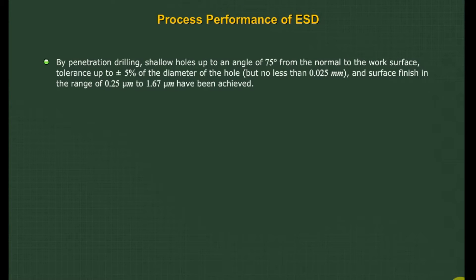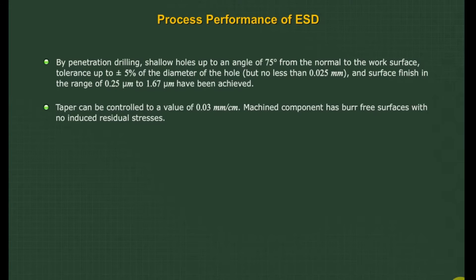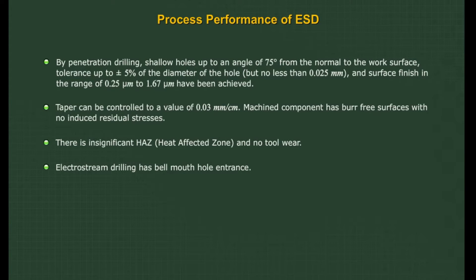By penetration drilling, shallow holes can be drilled up to an angle of 75 degrees from the normal to the work surface. Tolerance of up to ±5% of the hole diameter, but no less than 0.025 mm, and surface finish in the range of 0.25 µm to 1.67 µm have been achieved. Taper can be controlled to a value of 0.03 mm per cm. Machined components have burr-free surfaces with no induced residual stresses, insignificant heat-affected zone (HAZ), and no tool wear. ElectroStream Drilling produces a bell-mouth hole entrance. To increase production rate, simultaneous drilling of small holes is done.